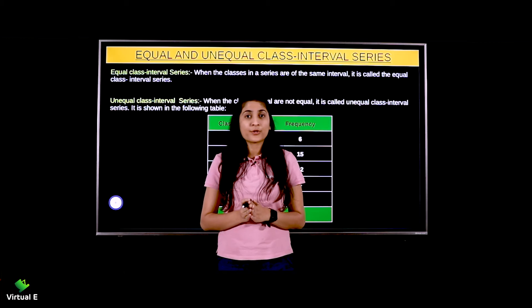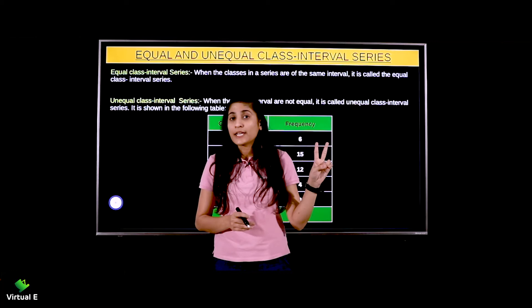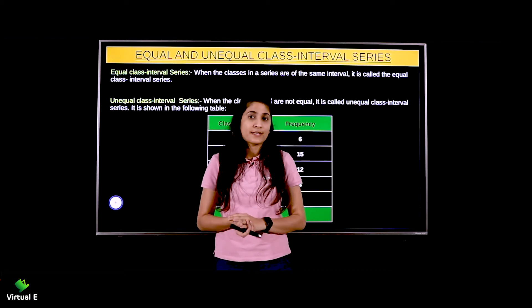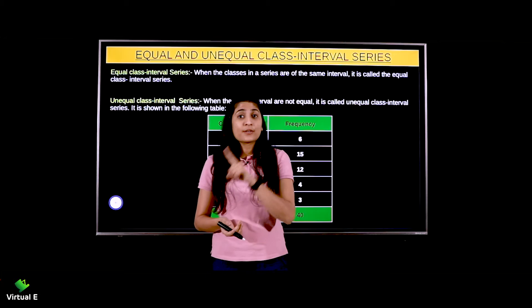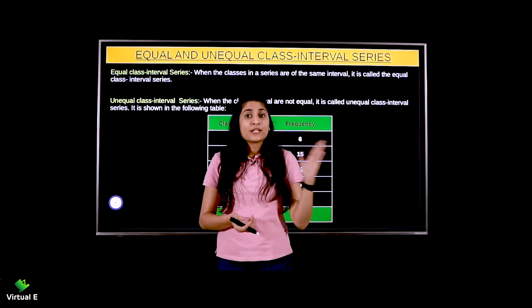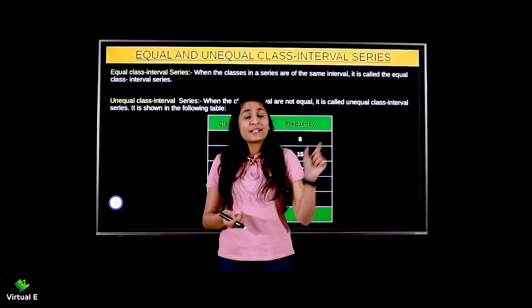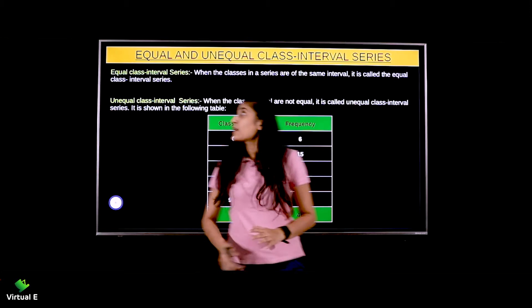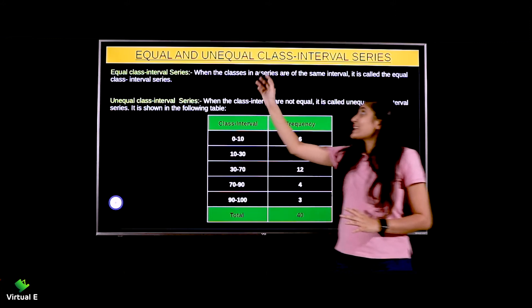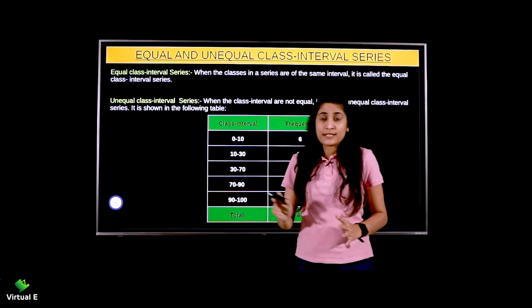Starting with the last topic of this chapter, we are left with only three series: equal class interval, unequal class interval, and mid-value series. Equal class interval mein kya hota hai? For example, 0 to 10, 10 to 20, 20 to 30 and so on — many classes, but the interval is the same, i.e. 10. When the classes in a series are of the same interval, it is called the equal class interval series.